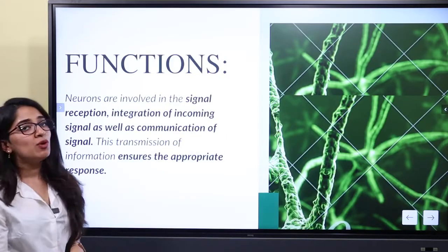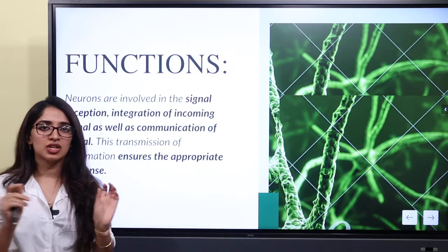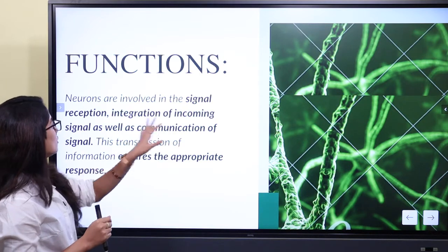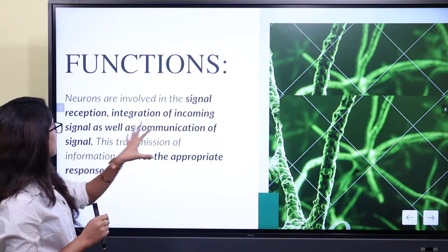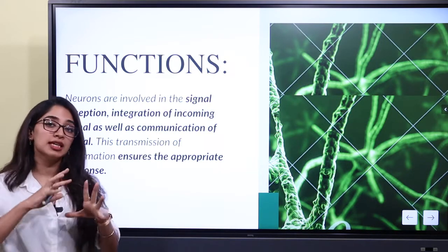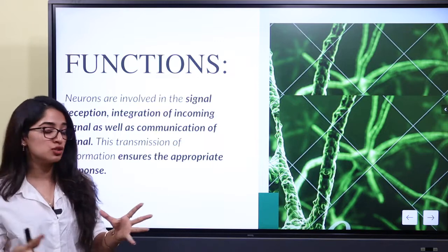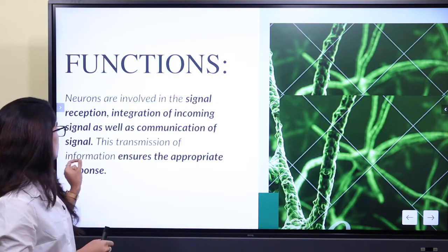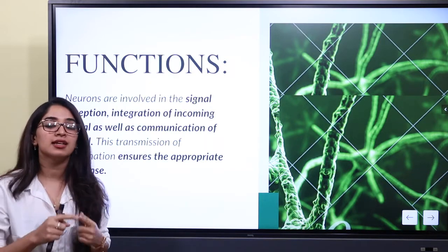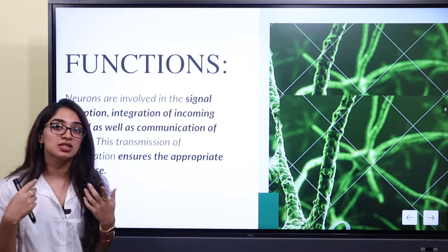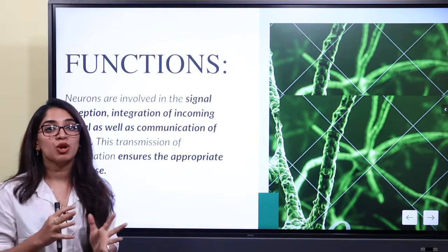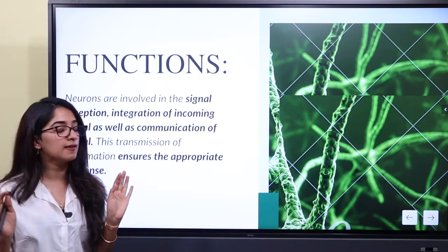What are the functions of neurons? The basic function is transmission of information. Neurons are involved in signal reception, integration of incoming signals, as well as communication of signals. This transmission of information ensures the appropriate response by the body, which is why neurons functioning properly is essential to human life.